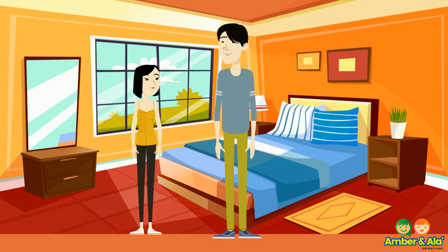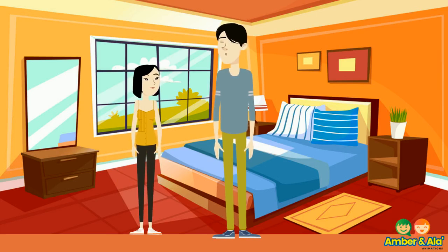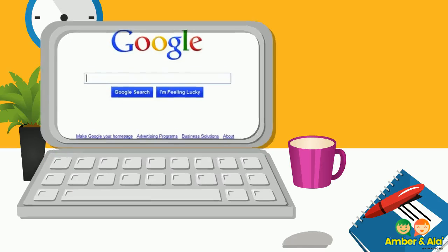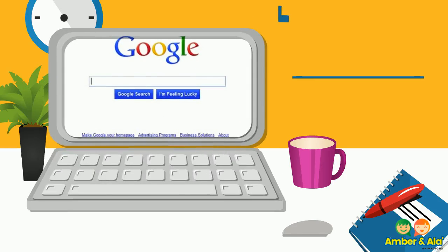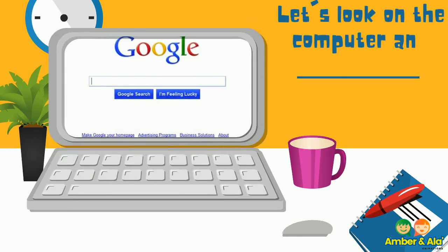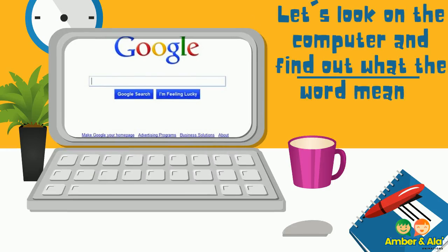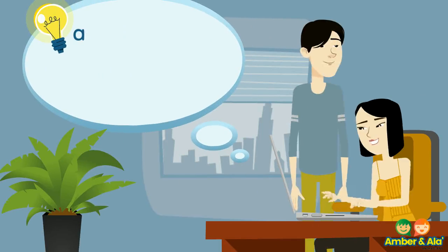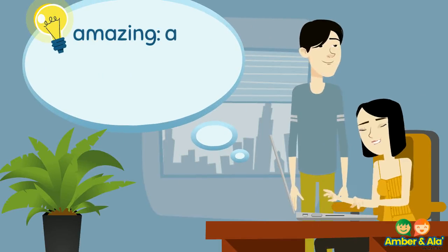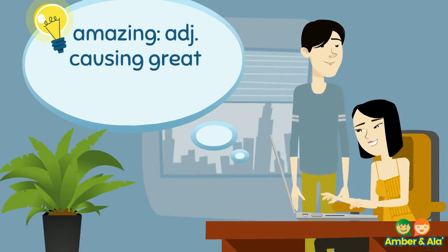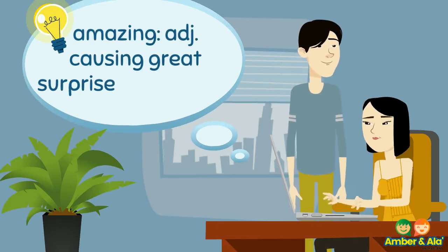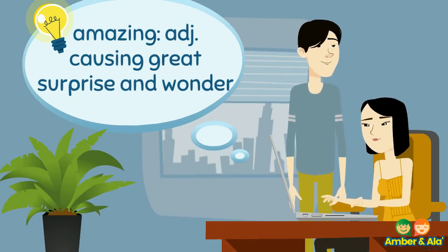We can use something to help us find the meaning. Don't worry. Let's look on the computer and find out what that word means. Let's use our Google search. Amazing is an adjective. It means causing great surprise and wonder.